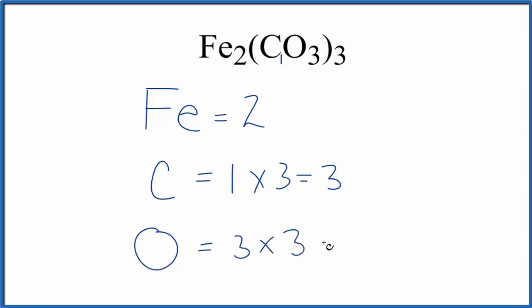Outside the parentheses again, so we have nine oxygen atoms. If we add this all up, we have nine plus three, that's twelve, plus two. We have a total of fourteen atoms in Fe2(CO3)3, iron(III) carbonate. Sometimes you'll...